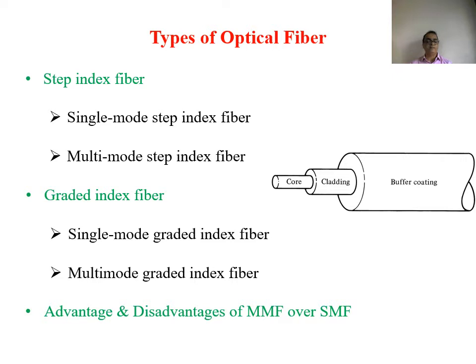If there is some microbend or external environmental disturbance, the fiber is not affected. From the refractive index point of view, if the refractive index of the core is uniform throughout and there is an abrupt change at the cladding, we call it a step index fiber. In the graded index fiber, the refractive index is a function of radial distance — as radial distance increases from center to outside, the refractive index decreases, with an abrupt change occurring at the cladding.